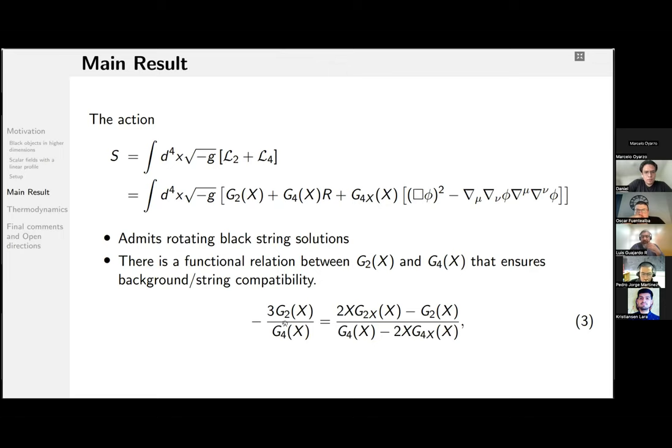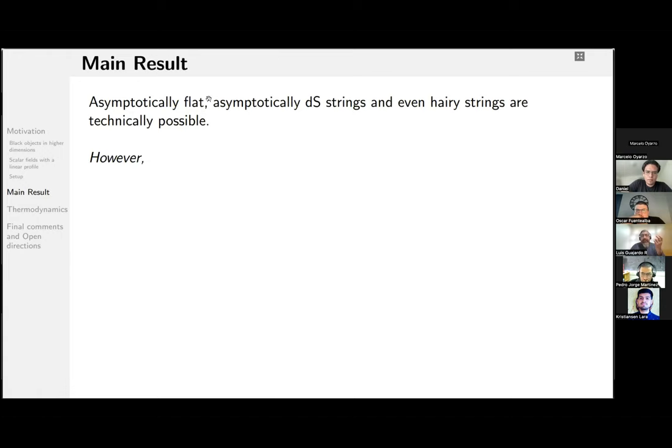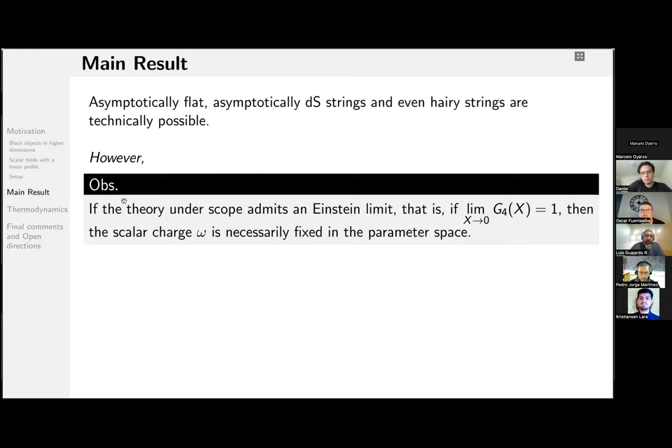I mean, technically, because we have mathematical consistency, if you want. However, I did not find any plausible model with flatness or de Sitter strings. However, if the theory under scope admits an Einstein limit, defined in such a way that when you kill the kinetic term, you just recover the Einstein-Hilbert action, then this scalar charge is necessarily fixed in the parameters.